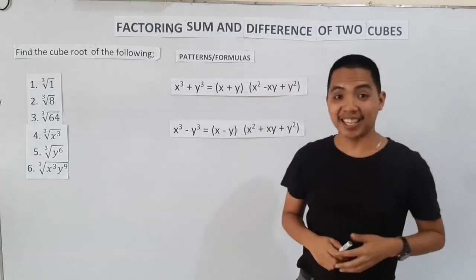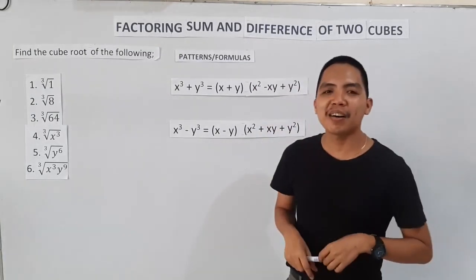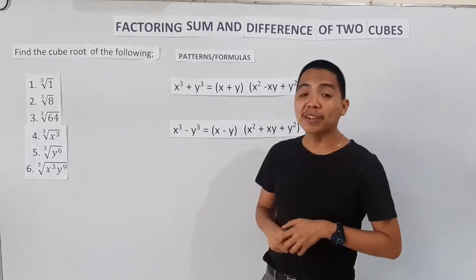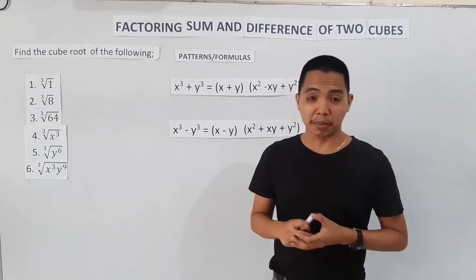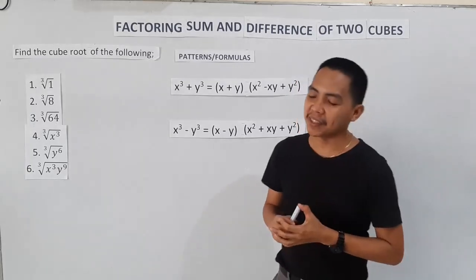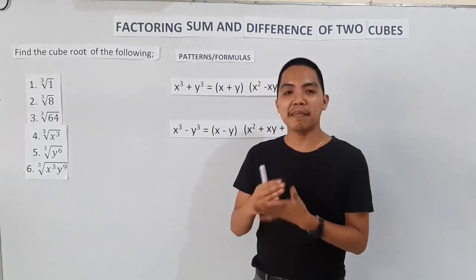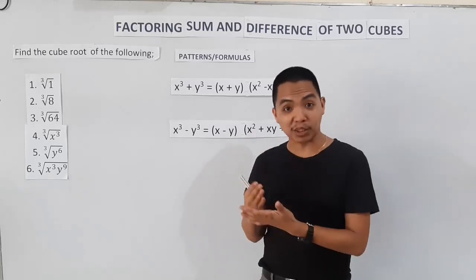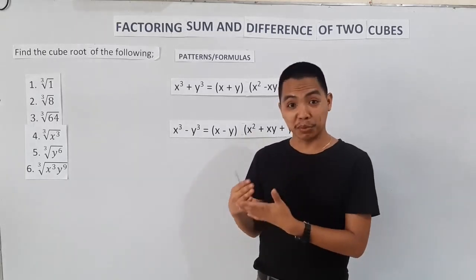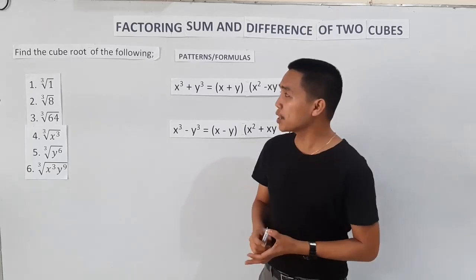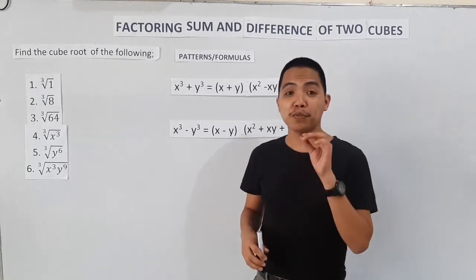Good day, Manga Andrian. We are now with the third type of factoring, and that is factoring sum and difference of two cubes. Last week, we discussed about the GCMF or the greatest common monomial factor, and the other one is the difference of two squares. So this morning, another type of factoring.